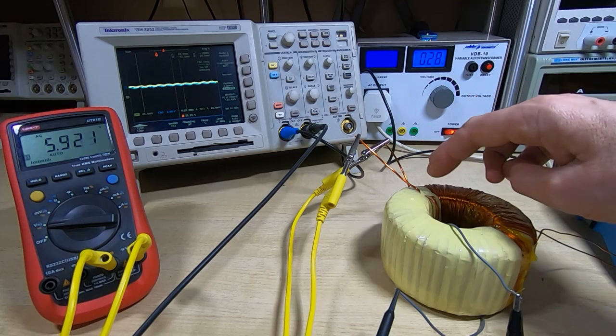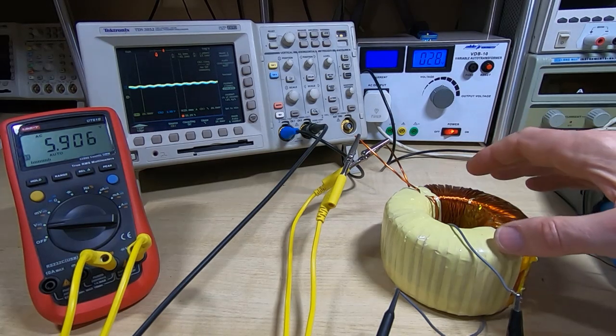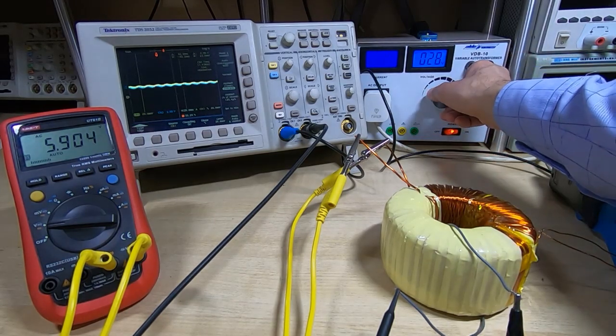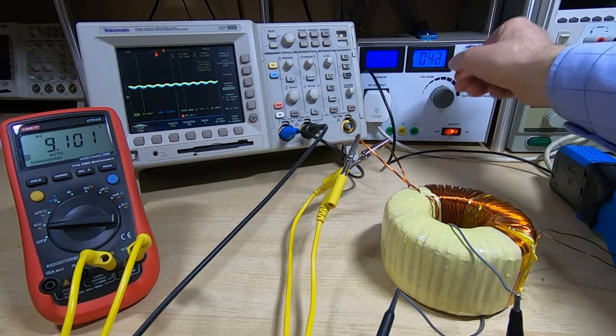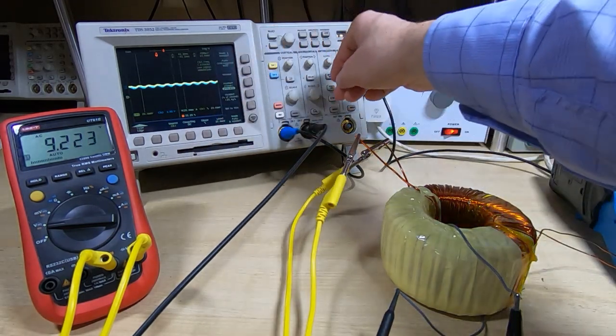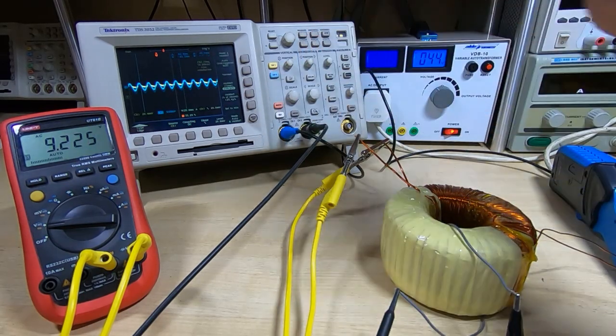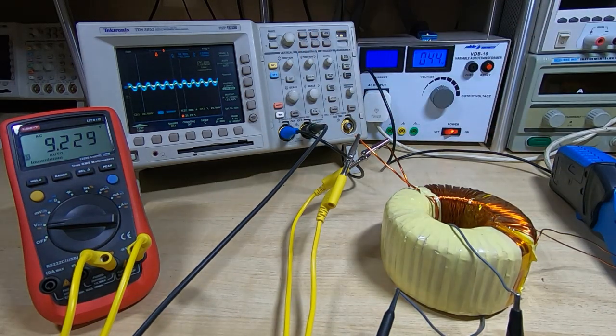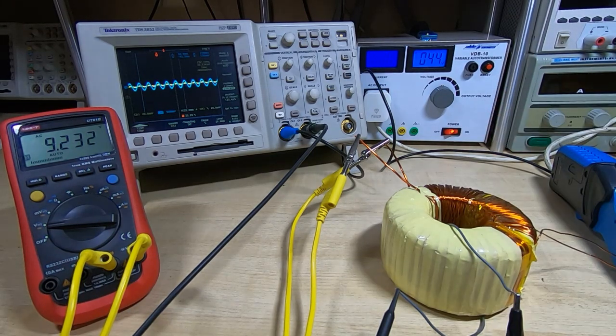We'll start to increase the voltage in the primary. You can see that the voltage on the secondary is starting to rise across this winding. I calculated the number of turns on the secondary to be 24 volts at 120 volts on the primary. Bear in mind this is unloaded, so I'll keep increasing the voltage.